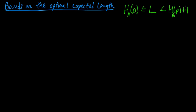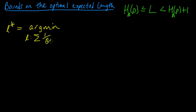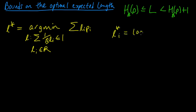So how are we going to construct such a code? When we were proving the lower bound, we found that the optimal l's — the minimizers of the constrained minimization problem where we considered all lengths satisfying the Kraft inequality — the optimal l-stars were log base b of 1 over p_i, assuming all the p_i's are strictly positive.